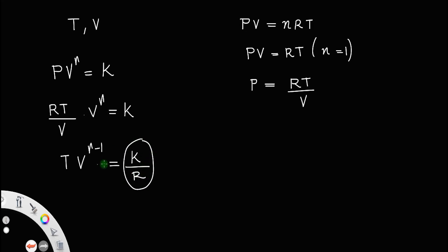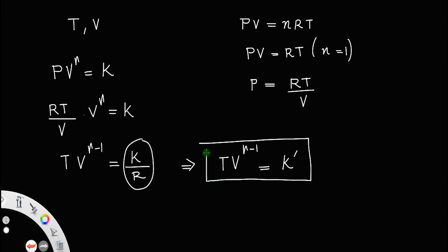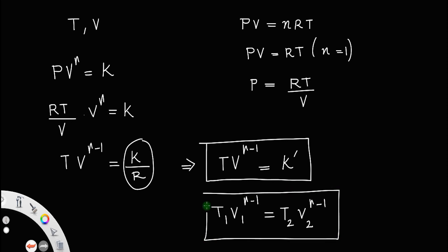This term is again a constant, which implies T V raised to gamma minus 1 equal to a constant, let us call that K dash. This is the adiabatic relation between temperature and volume. You can also write that as T1 V1 raised to gamma minus 1 equal to T2 V2 raised to gamma minus 1.